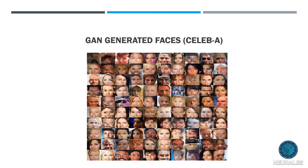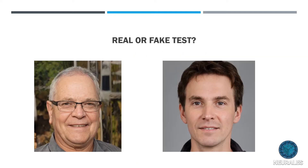Now let's look at the GAN faces from CelebA. You'll see there are some qualitative differences between this and the VAE-generated CelebA faces. There's a huge body of computer vision research that talks about the similarities and differences between what you get out of both kinds of models. Now we're going to look at something a little bit cooler. If you want to play a little game, feel free to pause the video for a second to see which image you think is real or fake.